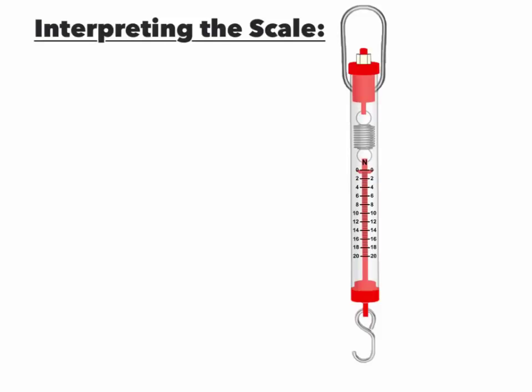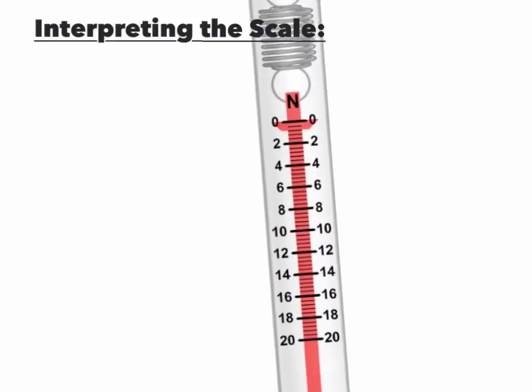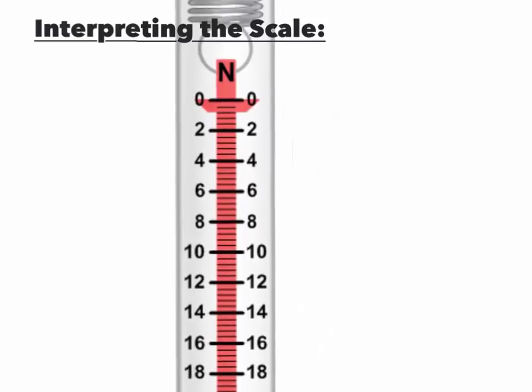To correctly interpret the scale you need to know what the markings on the scale represent. The little markings are what we call graduations. In order to read the graduations all you need to do is count the number of graduations between two marked locations. What I mean by this is if you start at one location, let's say we start at zero, and then we count the number of lines. So I count one, two, three, four, five lines.